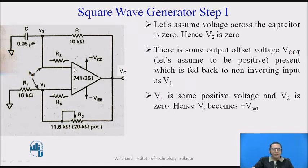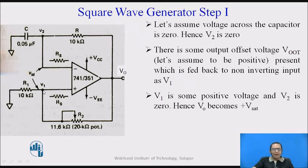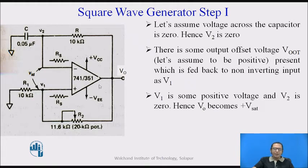As the voltage at the inverting terminal is zero, there is some voltage present at the output of the op-amp due to the output offset voltage. Let us assume this output offset voltage is positive. The part of that positive voltage is fed back and appears at V1, so V1 — the non-inverting input — is a positive voltage, while V2 at the inverting input is zero. Since the non-inverting input is greater than the inverting input, the output of the op-amp goes into plus-Vsat.